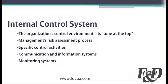The implementation of control policies and procedures should encompass each component of an effective internal control system, including the organization's control environment, its tone at the top, management's risk assessment process, specific control activities, communication and information systems, and finally, monitoring systems.